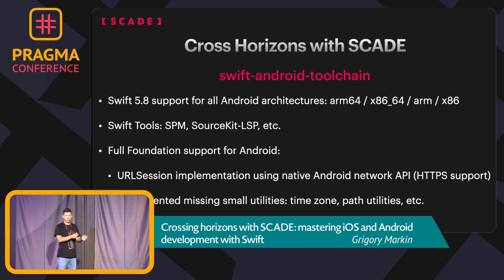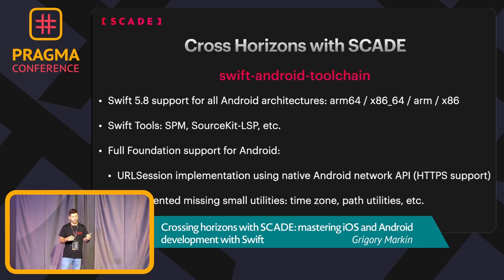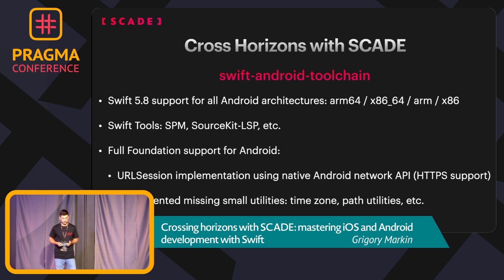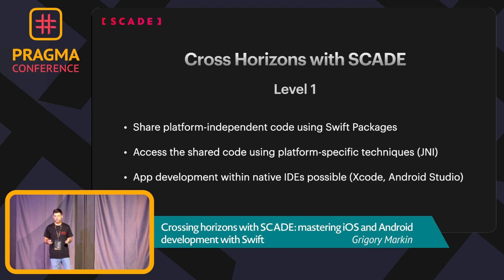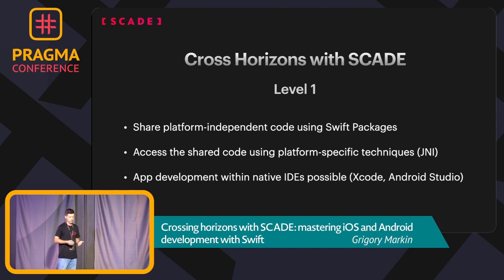To share meaningful code, you need to support the standard library. We took the Swift Foundation library and extended it so it's completely equivalent to what you have on Apple. As long as you use the Foundation framework, you can build and use that functionality on Android. We create a Swift package, write all shared code in one package, and build it using the Swift compiler. At the end we have a dynamic library which we import into Android Studio and call functions via JNI.